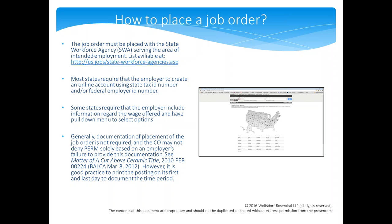How to document the job order: the general rule is that documentation of the job order placement is not required because if it is posted with the Department of Labor, they should have a record of it. However, I would be careful. You always want to print out and document evidence of the job order being active. I usually print a screenshot from the first day and the last day of the posting, and also a few extra days, making sure the date of the posting appears on the printout.